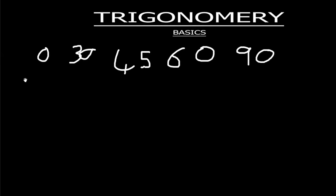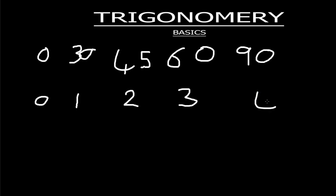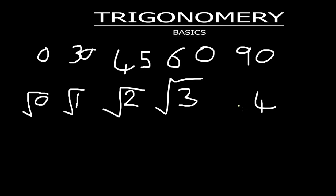So we'll start first by writing numbers from zero up to four. I'll write zero, one, two, three, and then four. After this, I'm going to find the square root of all the numbers — the square root of zero, one, two, three, and four. I'm doing it very slowly so that everyone can understand, and we find the answers after square rooting.